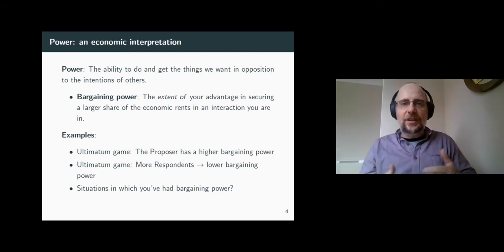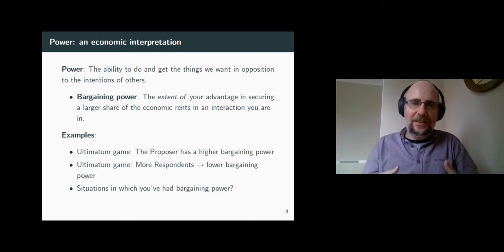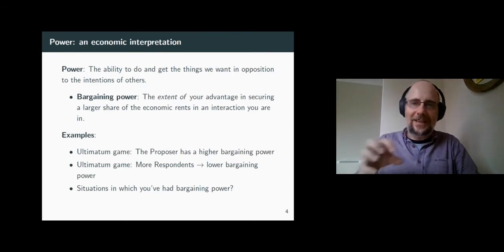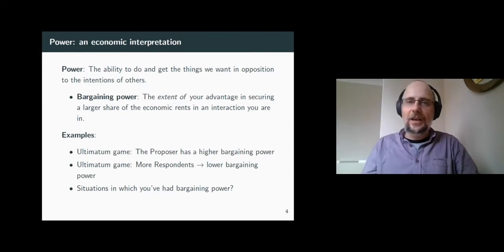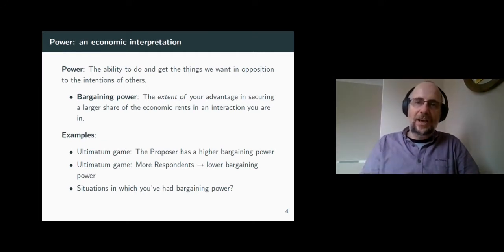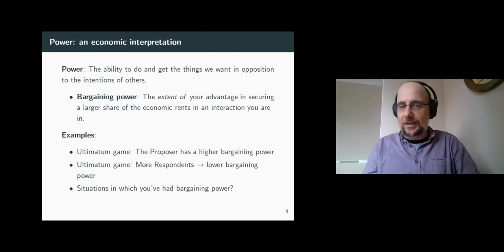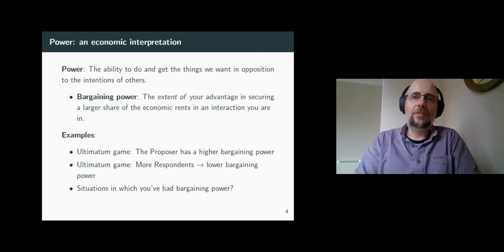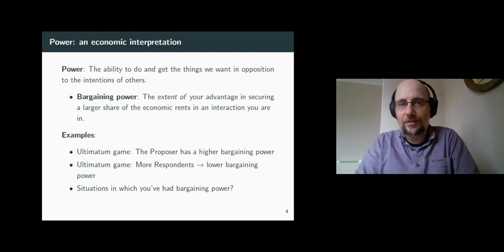As incentives and constraints are embedded in the concept of power, we can safely assume that economic institutions will affect your ability to affect the actions of others. In other words, they will affect your power relative to the power of others. Those agents with a stronger hand given to them by the economic institutions will very likely also be able to secure a larger share of the pie produced by economic interactions.